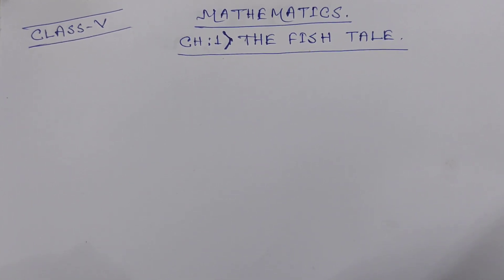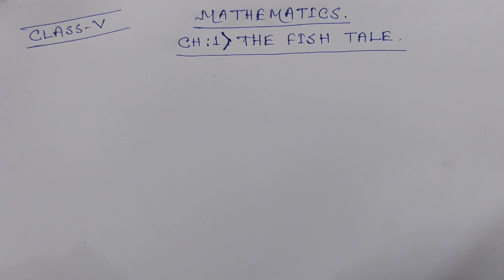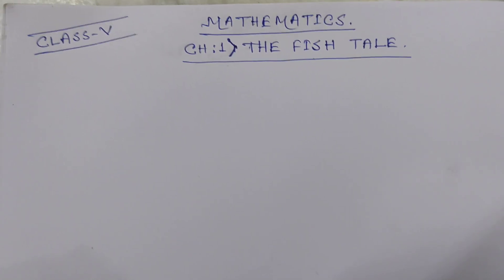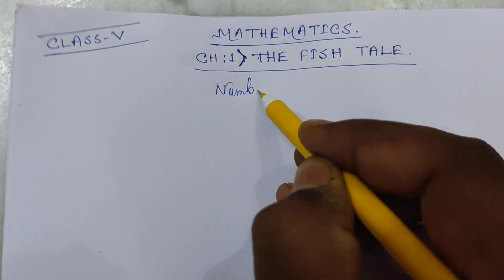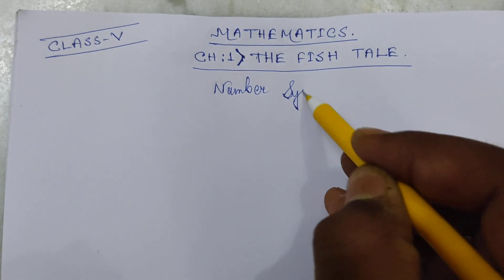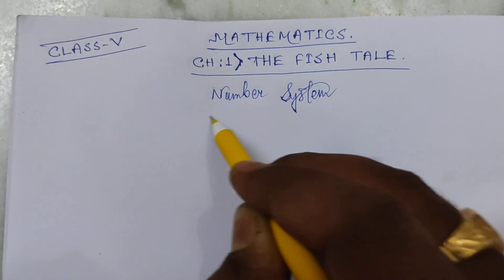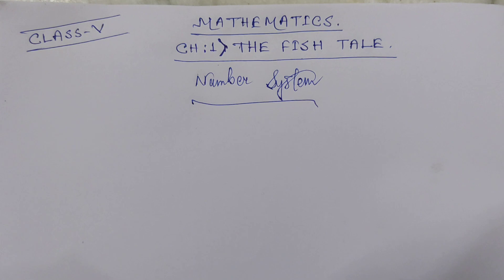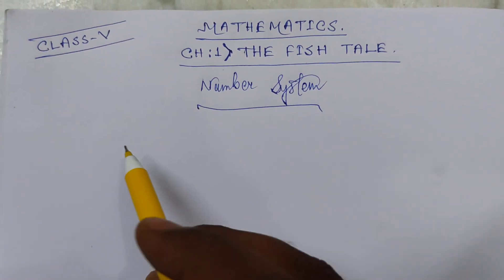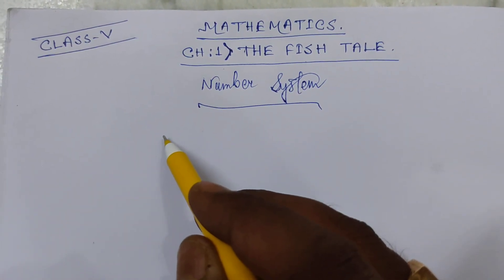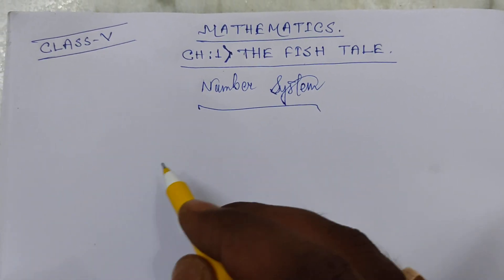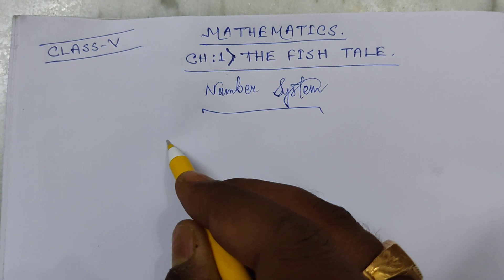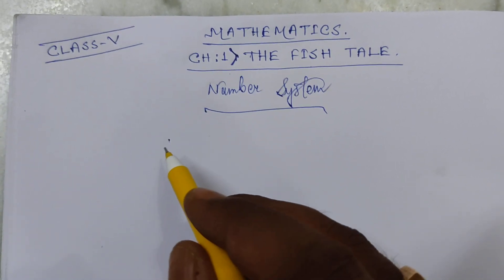Today we are going to start the chapter and we will discuss about number system. The number system starts from the counting number. Counting number means the number by which we can count: 1, 2, 3, 4, 5 and so on up to infinite. There is no limit.